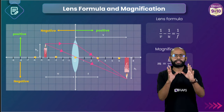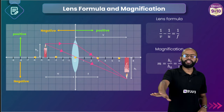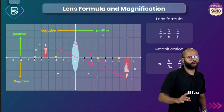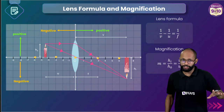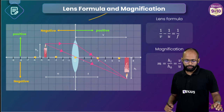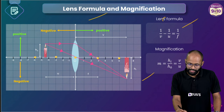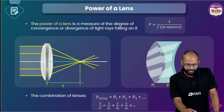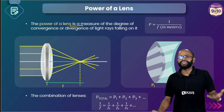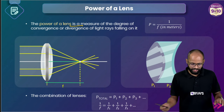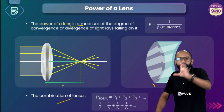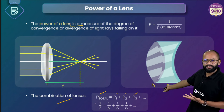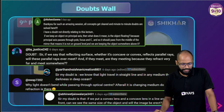If you are clear with mirror formula and magnification, lens formula is very easy — everything is very similar. Today we covered: lens formula (1/v − 1/u = 1/f), magnification (m = v/u), power of a lens (P = 1/f, focal length in meters), and combination of lenses (P = P1 + P2 + P3, or equivalently 1/f = 1/f1 + 1/f2 + 1/f3). Please watch the mirror formula lecture if you haven't yet.